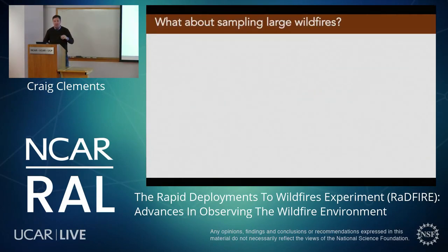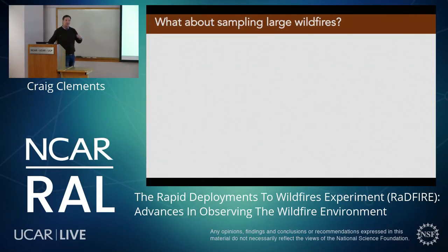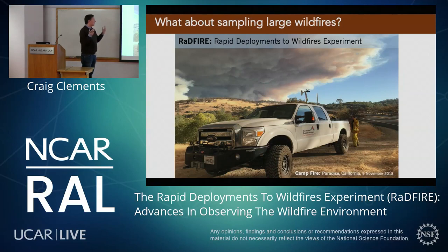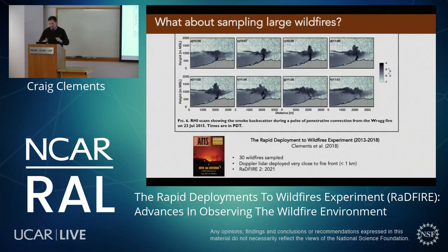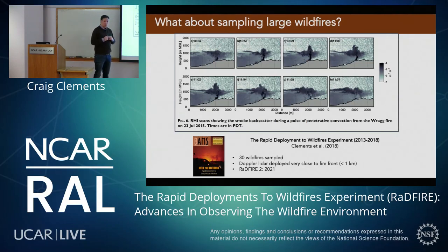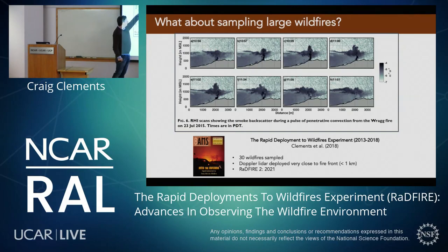But what happens when we think about large wildfires? Does this scale appropriately? We're talking 10- to 30-foot flames at small scale; thinking about chaparral and forest fires, you're talking 100-foot flames and greater. That brought us to the RadFire program — the Rapid Deployments to Wildfires Experiment. Basically, we have a LIDAR mounted on a truck with a radiosonde system and we chase wildfires. We did this for about six years, summarized in a BAMS article, with about 30 wildfires sampled. We deployed the Doppler LIDAR very close to the fire front — out two kilometers — and can see the plume punching through a stable layer.